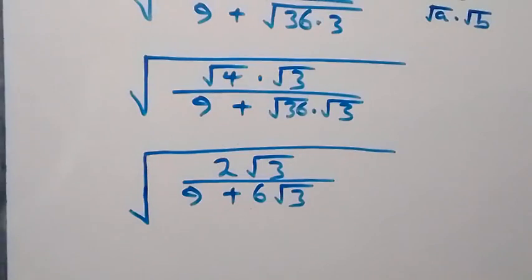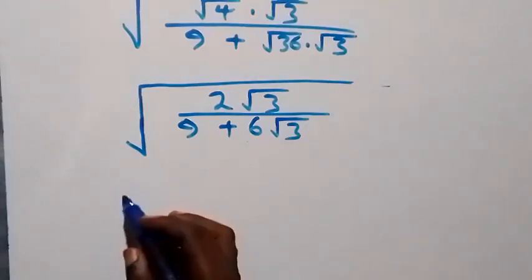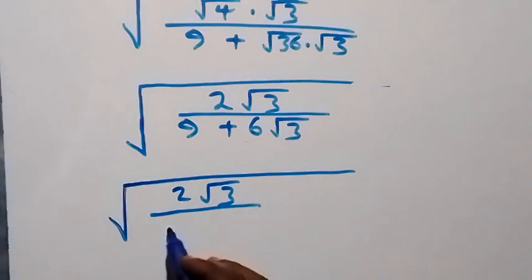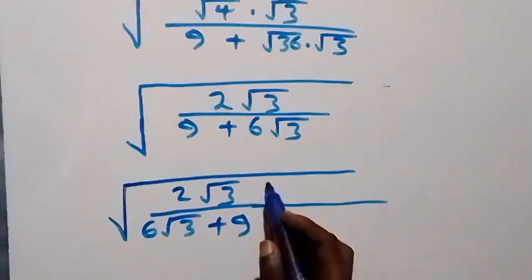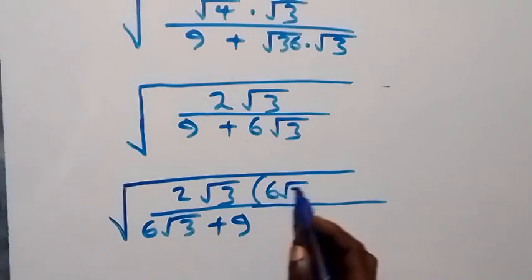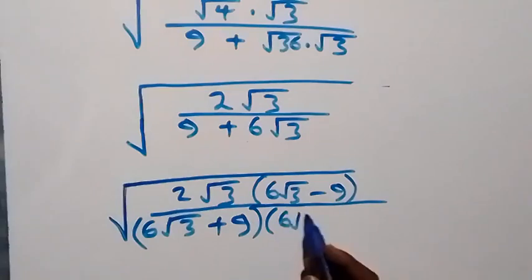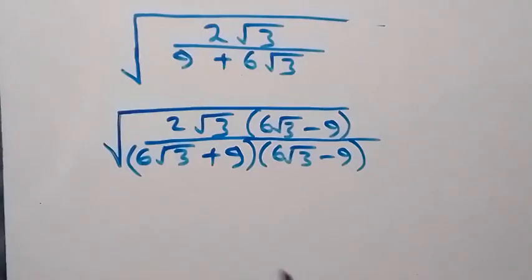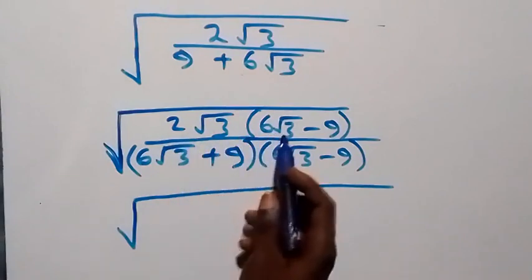What we have inside this square root we can rationalize by multiplying with the conjugate. When we rearrange, this is the same as square root of 2 root 3 divided by 6 root 3 plus 9, then multiplying by its conjugate. We have into bracket 6 root 3 minus 9, also multiplied by 6 root 3 minus 9. Opening the bracket gives square root of 2 root 3 times 6 root 3.